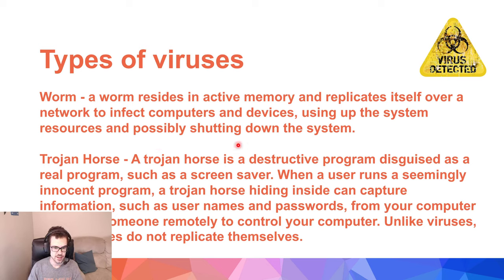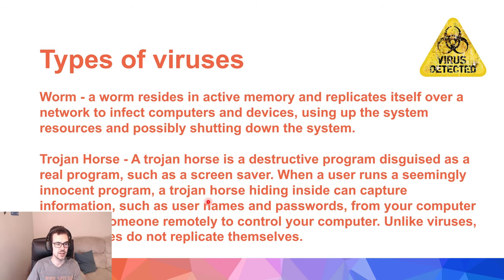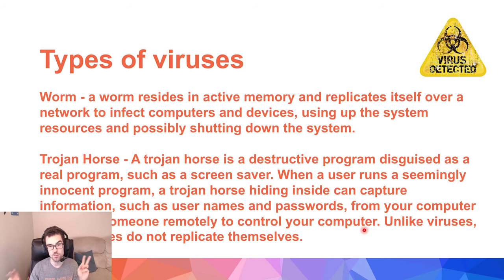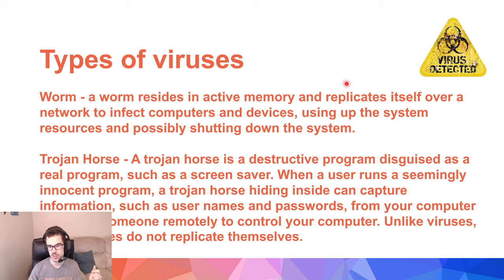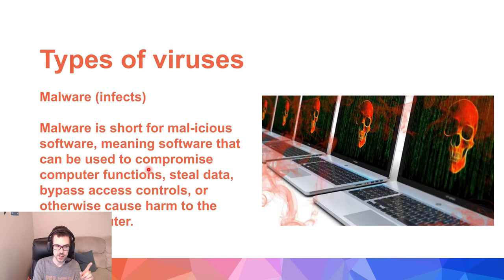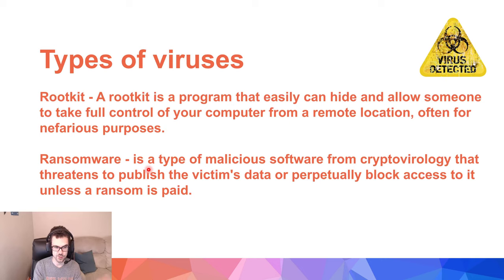A Trojan Horse is a destructive program disguised as a real program, such as a screensaver or a small icon — it looks innocent. Just like the story of Troy pulling the Trojan Horse inside, once launched it can capture usernames and passwords and even enable someone to remotely control your computer — they could even look through your webcam. Unlike a worm, the Trojan Horse doesn't replicate itself onto other machines. Malicious software is more of an overall category, and worm, Trojan Horse, Rootkit, and Ransomware are the individual divisions within it.